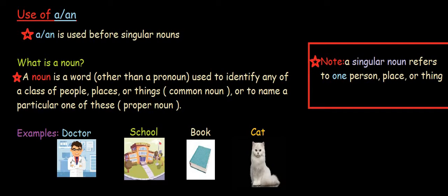Now a and an is used before singular noun. So what is a noun? A noun is a word that is used to identify any person, place or a thing.